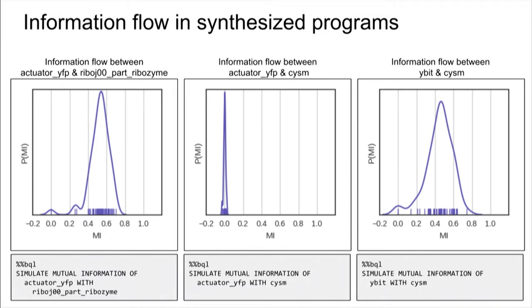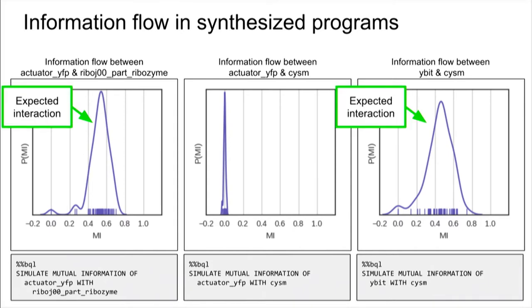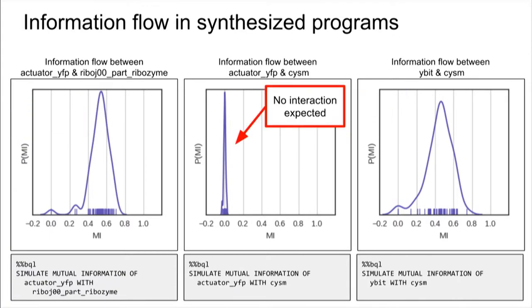And here's one example where we used the synthesized programs to basically cross-check intuitions of the data. So in this data set, we would expect an interaction between the part of the genetic circuit and the output. And we also expect an interaction for YBIT and CYSM. We wouldn't expect an interaction for the output and a gene that is not part of the circuit.